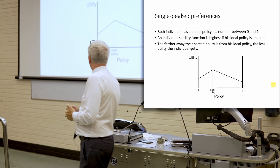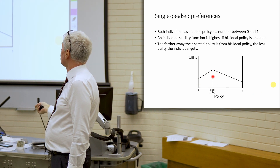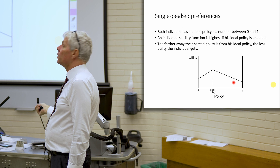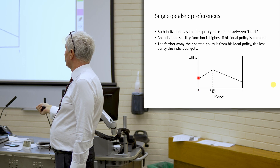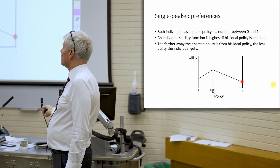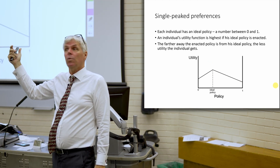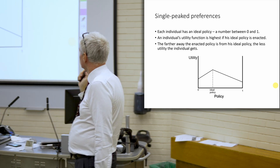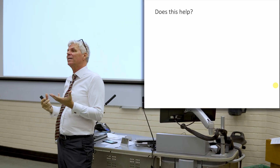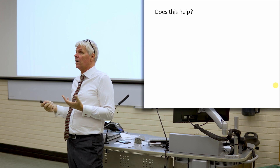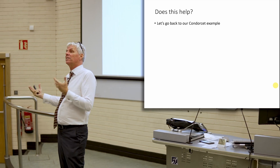Here is somebody with nice, well-behaved single-peaked preferences. They have their ideal policy, and the farther we move away from it, the lower their utility. Of course these can be curved or whatever, but that's the idea. If we get 0, they get a low level of utility. If we get 1, they get an even lower level of utility. And then the closer you get to their ideal policy, the happier they get. So then the question is: does this help with our problem? Does it solve the kind of problems that Arrow was on about?